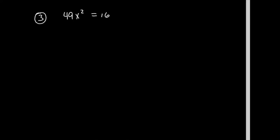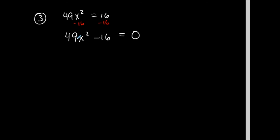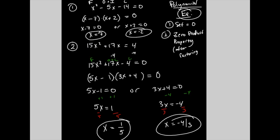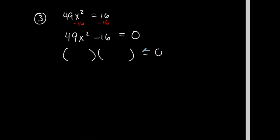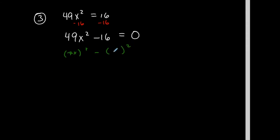Okay, let's look at this next one. Again, it is an equation — it has an equal sign. The first thing I'm going to do is set it equal to 0 by subtracting 16 from both sides. This is one method to solve this, and we're going with the factoring method. Now this is a binomial — not a trinomial like the other examples — so I'm going to try a special factoring method. Is it a difference of squares? Can I represent it as something squared minus something squared? Yes — this is 7x squared and this is 4 squared, so it follows the difference of squares pattern.